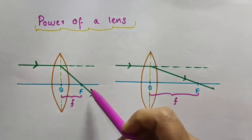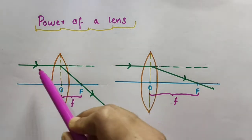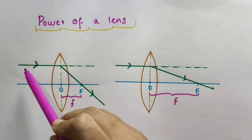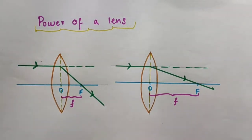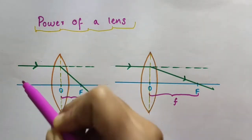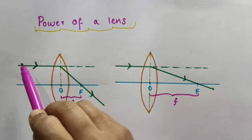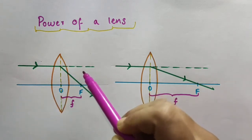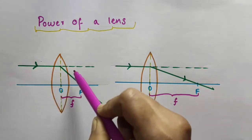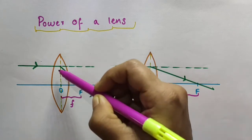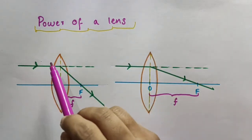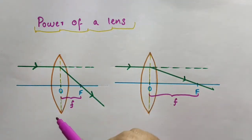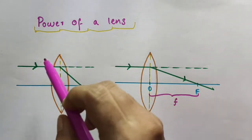Here O is the optical center and this is the principal axis. We consider a ray of light coming from some object kept on the left side of the lens. You can also consider the object at infinity, in which case the rays coming from it will be parallel to each other and parallel to the principal axis. Here I have considered a ray parallel to the principal axis of this convex lens.